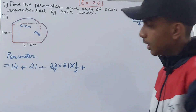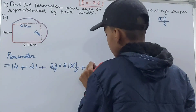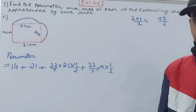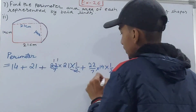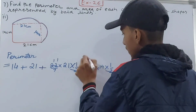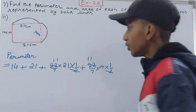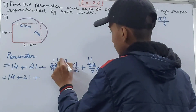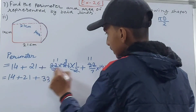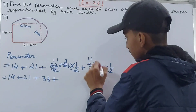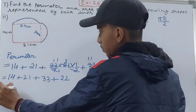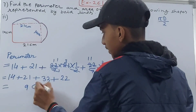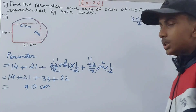Plus for the second semicircle: (22/7) × 14 × (1/2). Solving: 21/7 = 3, so 11 × 3 = 33. For the second: 14/7 = 2, so 11 × 2 = 22. The perimeter is 14 + 21 + 33 + 22 = 90 centimeters.